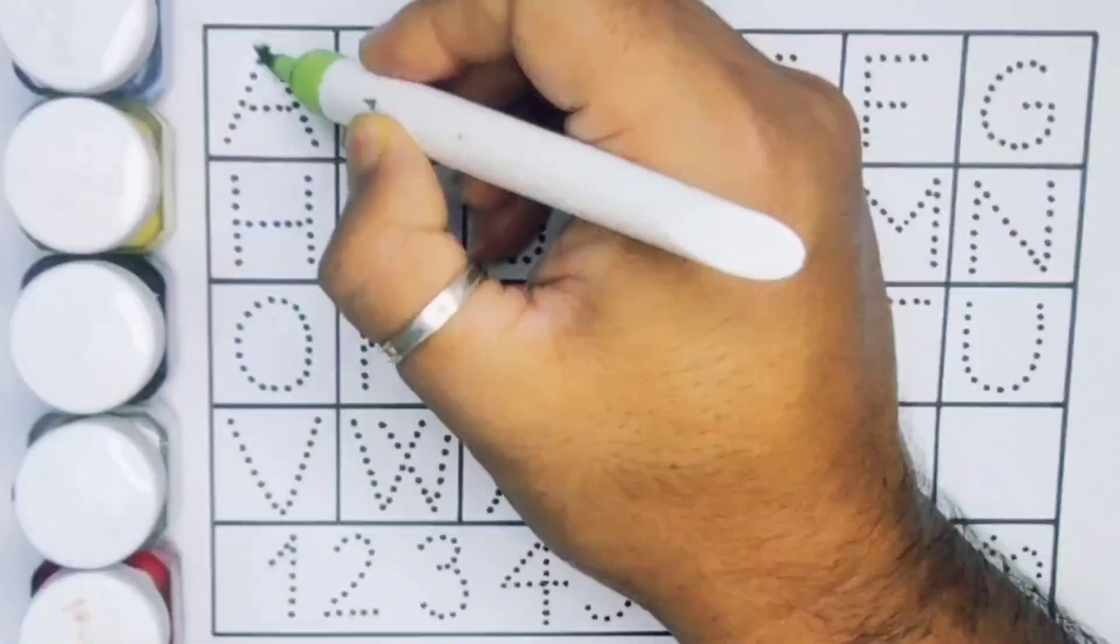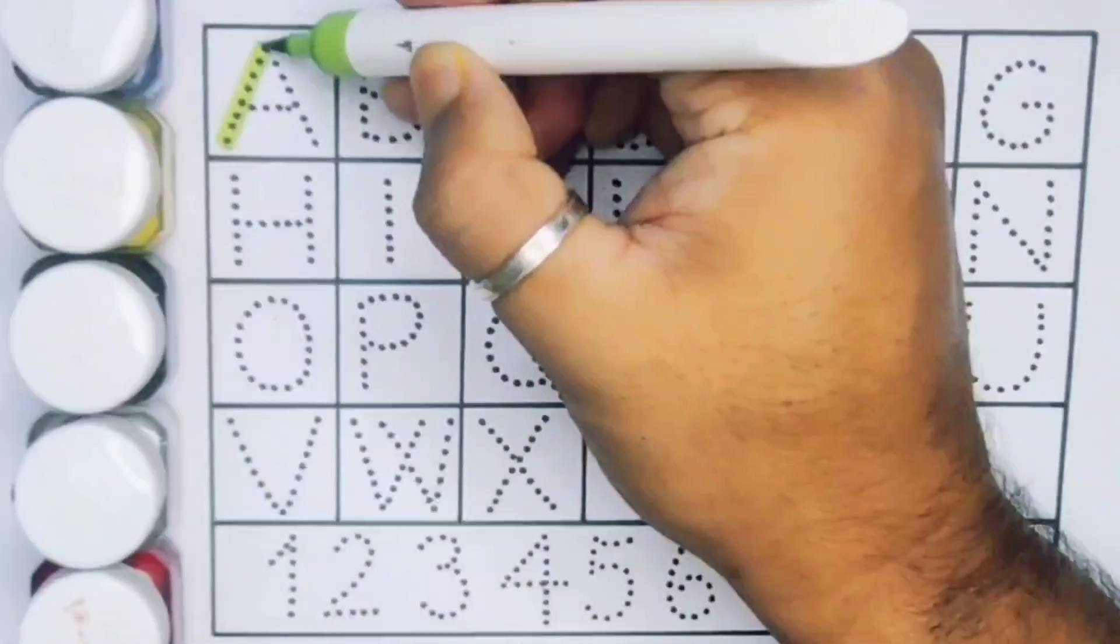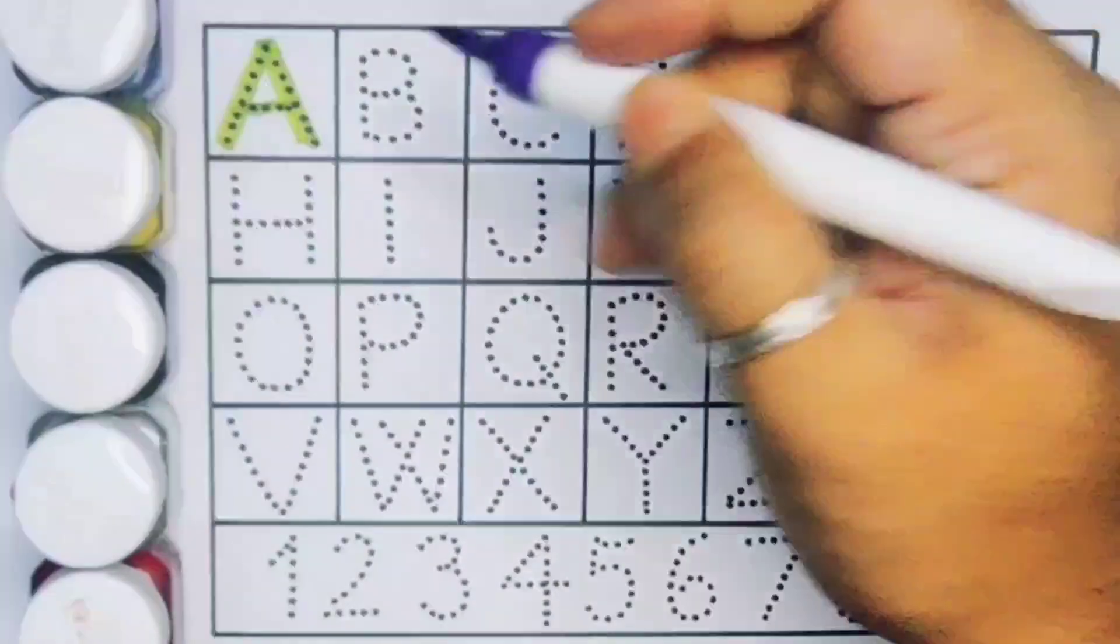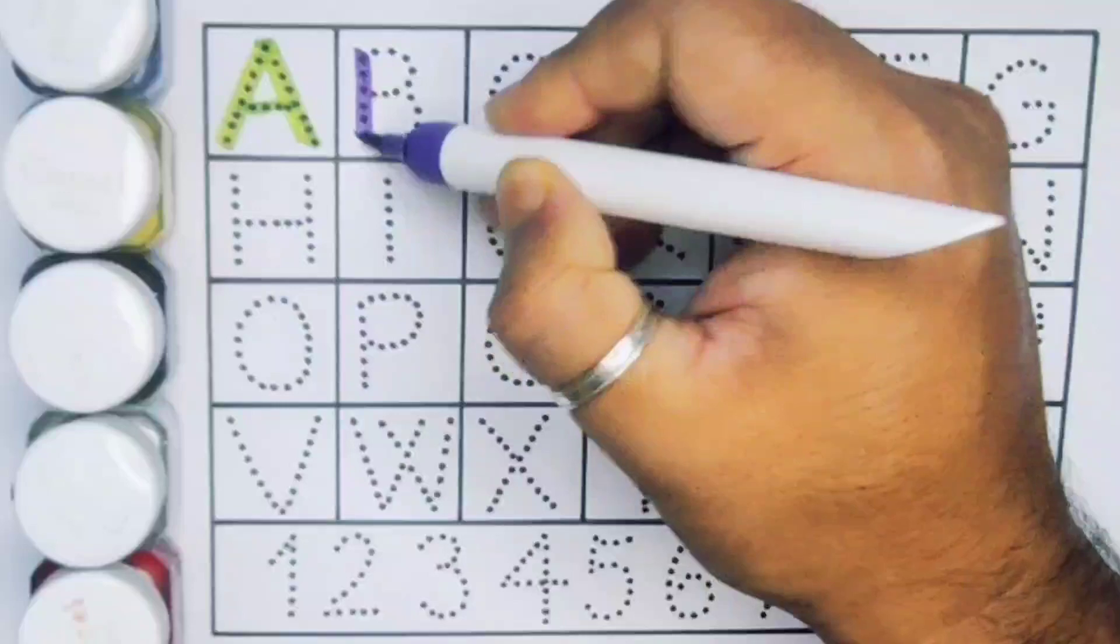First, A. A for ant. Next kids, B. B for butterfly.